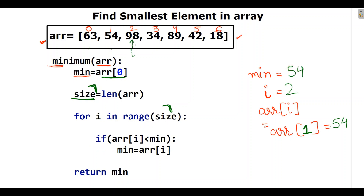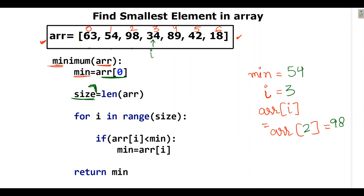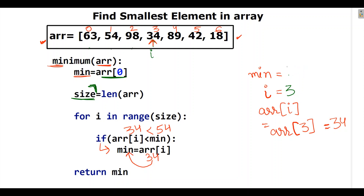For index 2, ARR[2] is 98. We compare 98 with min (54): is 98 smaller than 54? No, so it goes back to the loop. For i equal to 3, the value is 34. Is 34 smaller than 54? Yes — so 34 is assigned to min, and min is now 34.